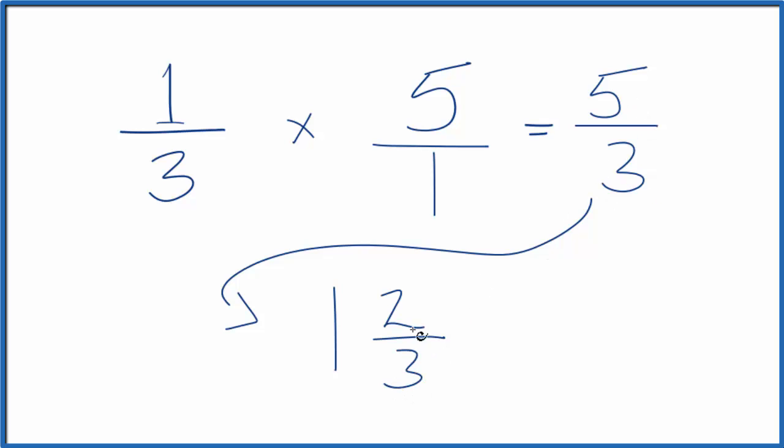So five-thirds, that's the same as one and two-thirds. So in answer to our question, one-third of five, it's one and two-thirds, or the improper fraction, five-thirds.